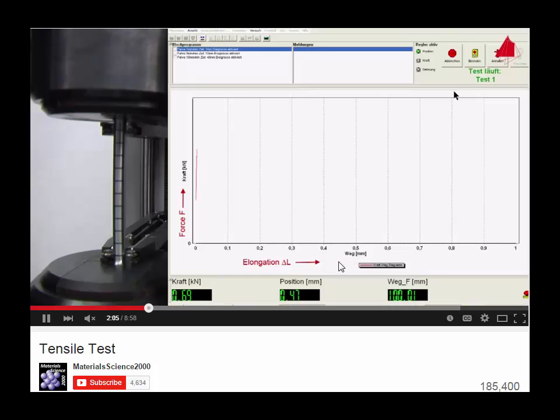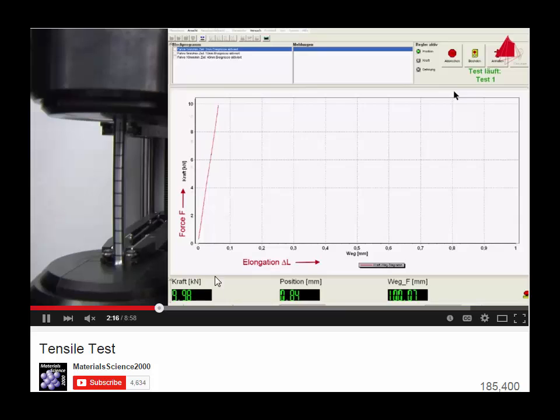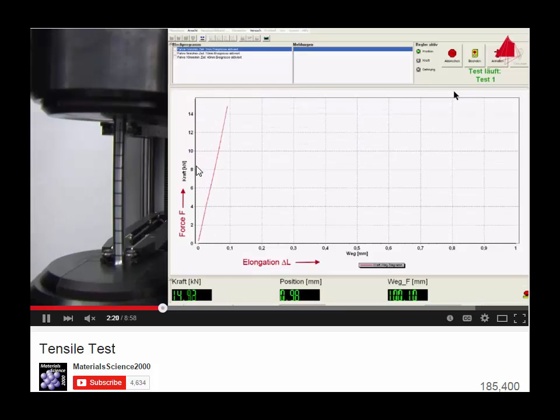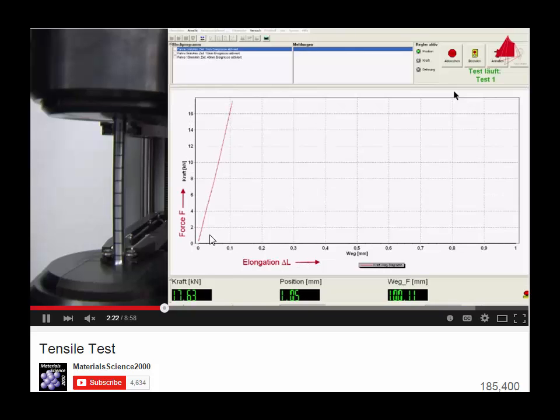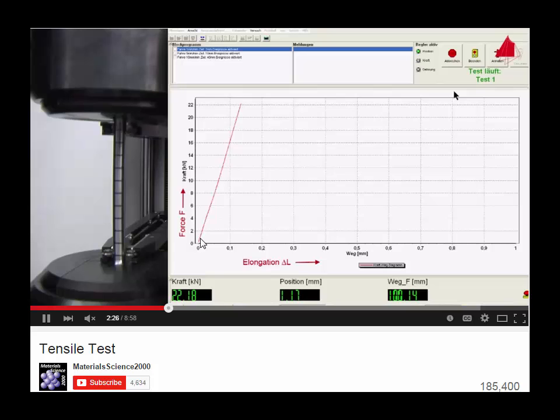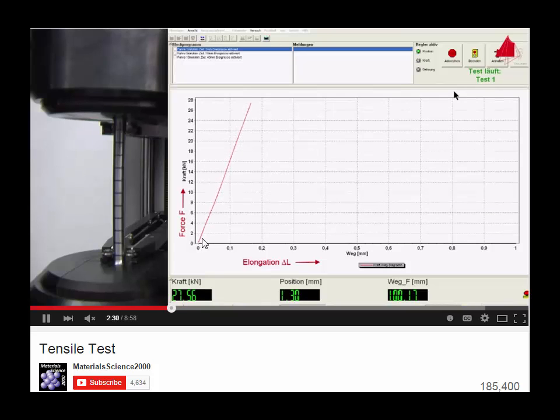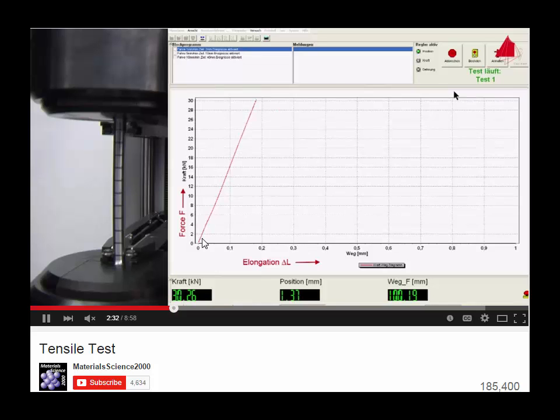So the test has begun. The loading occurs slowly so that we can graph the useful properties of the material. Now, notice as this load is being applied, that the force versus elongation is approximately linear. This is a very important behavior of many of the engineering materials that we use.